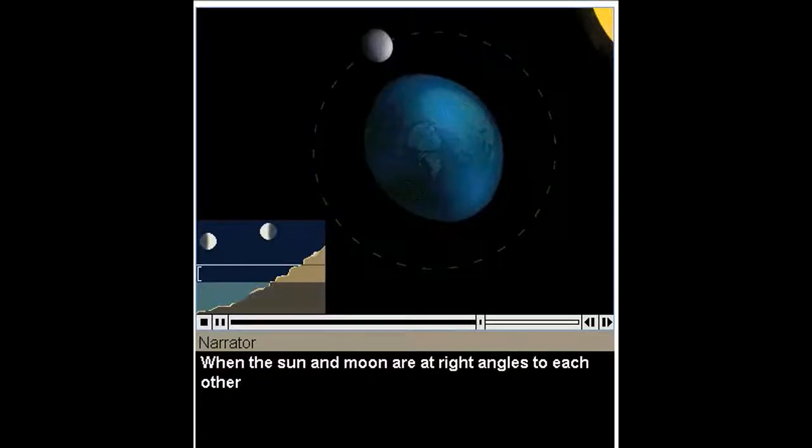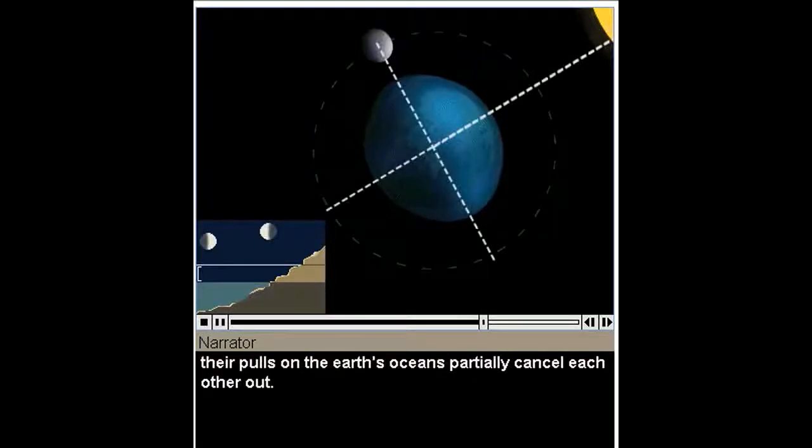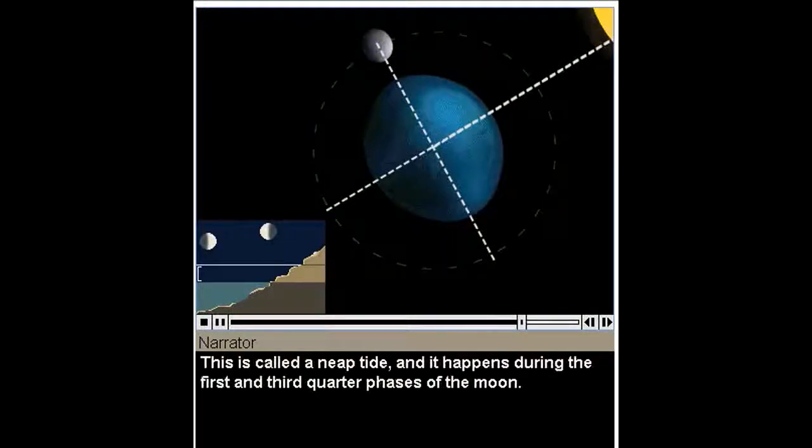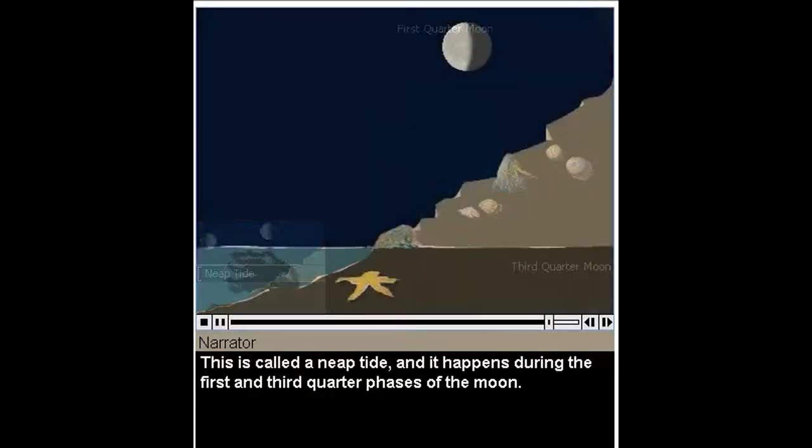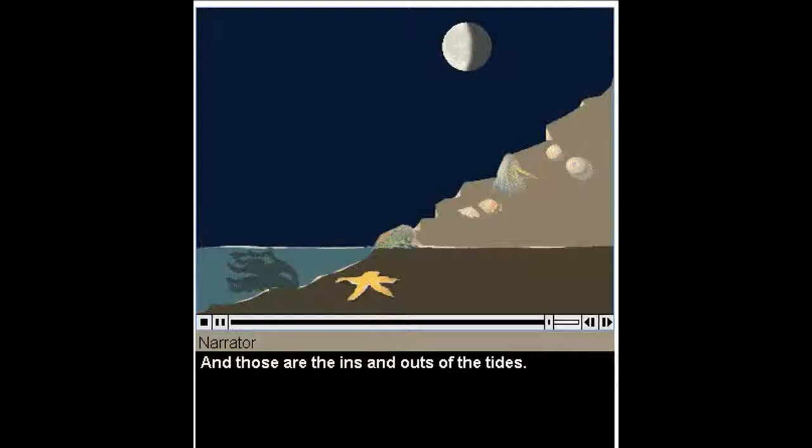When the Sun and Moon are at right angles to each other, their pulls on the Earth's oceans partially cancel each other out. At this point, tides are at the most medium state. This is called a neap tide, and it happens during the first and third quarter phases of the Moon. And those are the ins and outs of the tide.